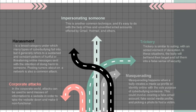Fourth, masquerading. Masquerading happens when a bully creates a media profile or identity online with the sole purpose of cyberbullying someone. This could involve creating a fake email account, a fake social media profile, and selecting a new identity and photos to draw the victim in. Fifth, harassment. Harassment is a broad category under which many types of cyberbullying fall, generally involving a sustained, constant pattern of hurtful or threatening online messages sent with the intention of doing harm.